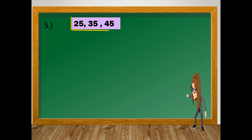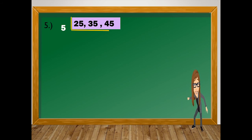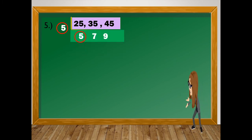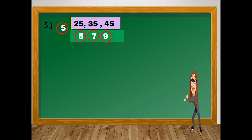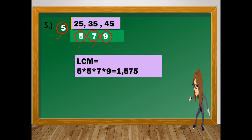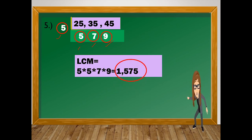For the last number, we have 25, 35, and 45. The common factor is 5. So 25 divided by 5 is 5, 35 divided by 5 is 7, and 45 divided by 5 is 9. The least common multiple is 5 times 5 times 7 times 9, which equals 1,575. Correct!